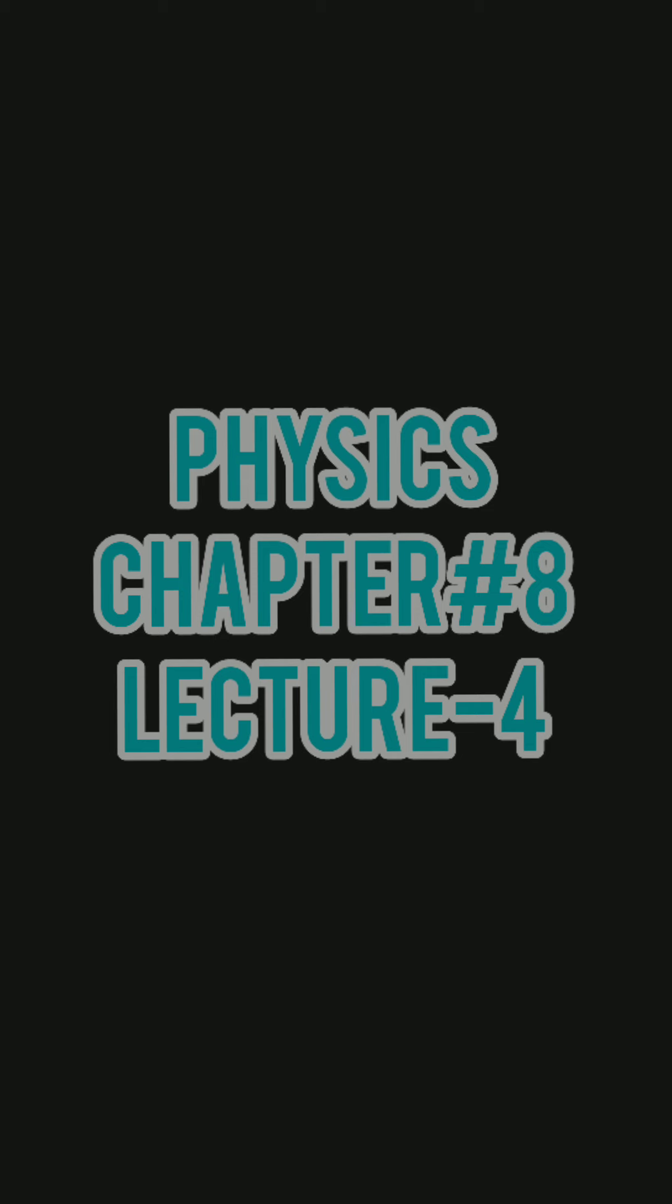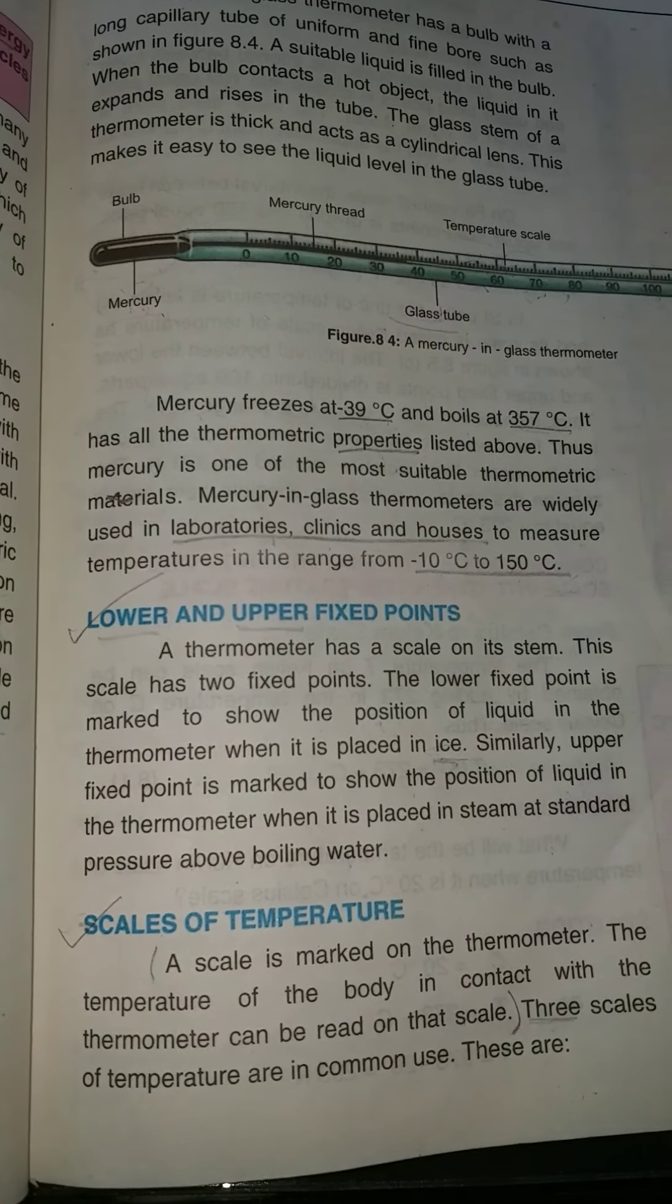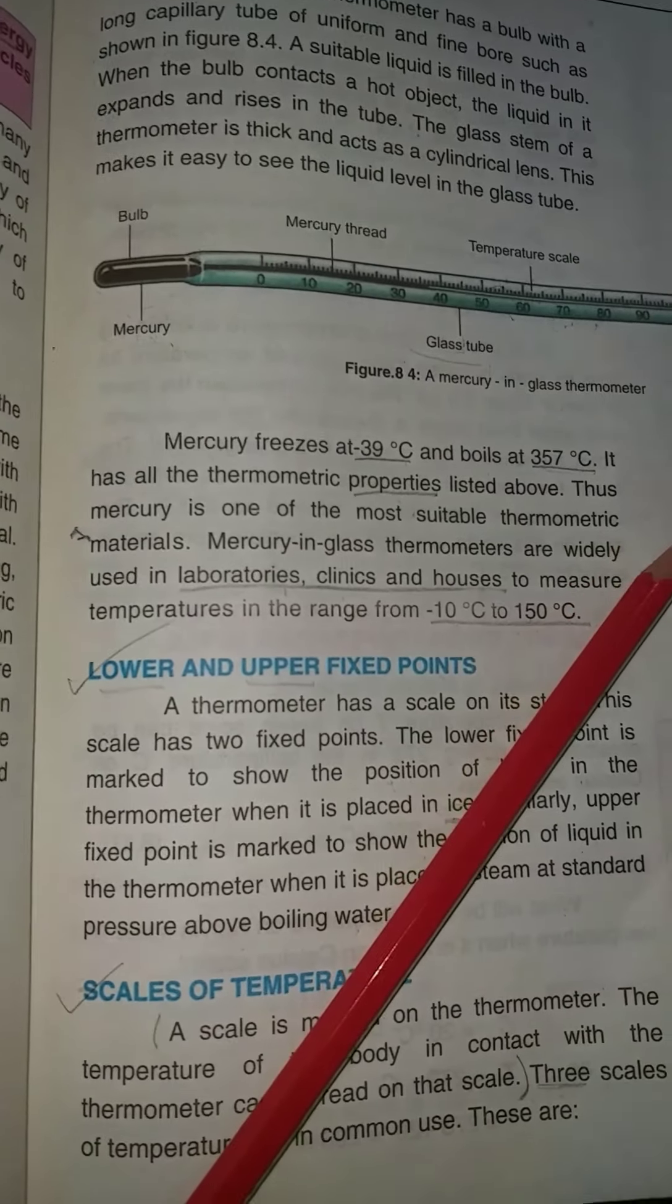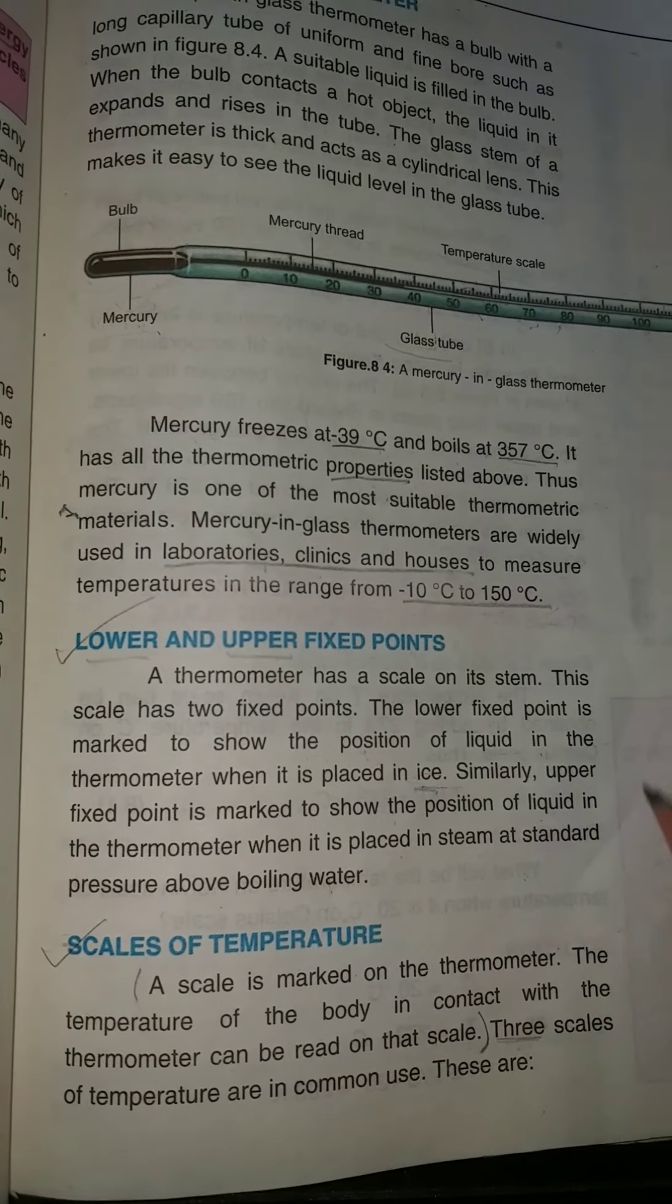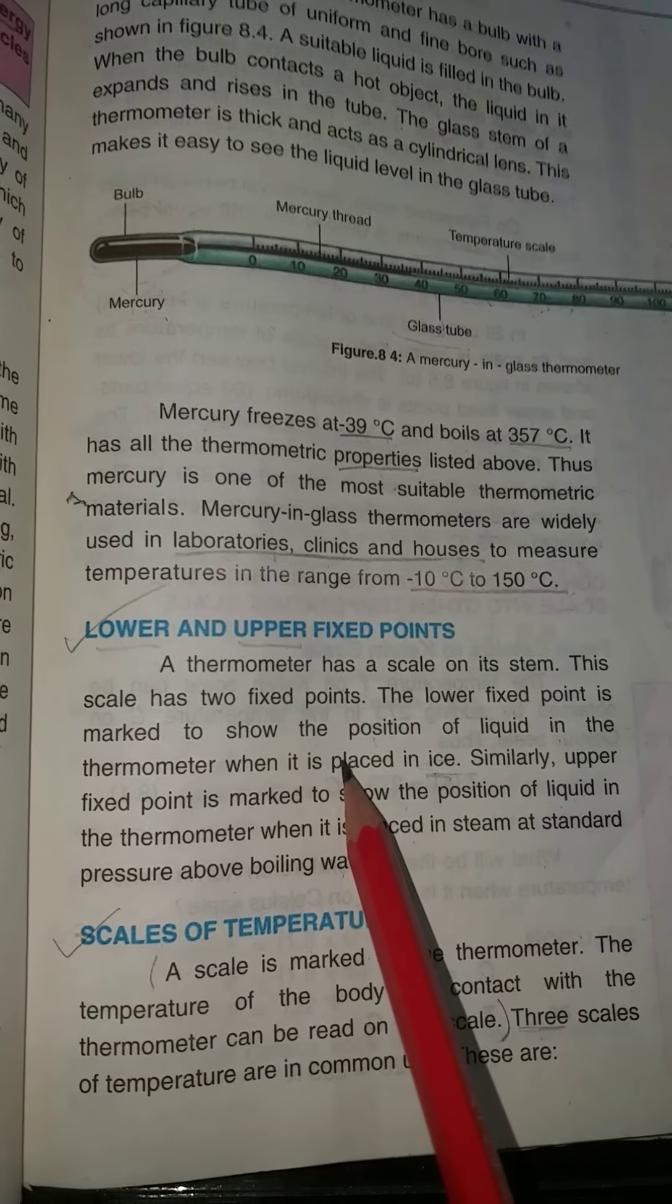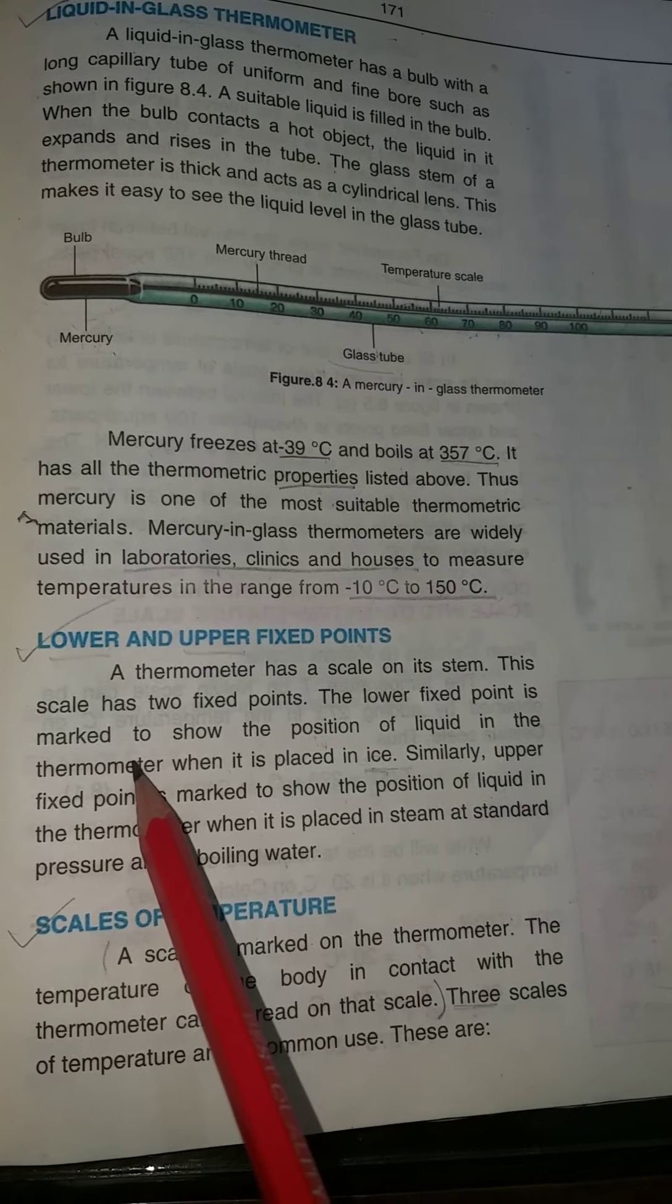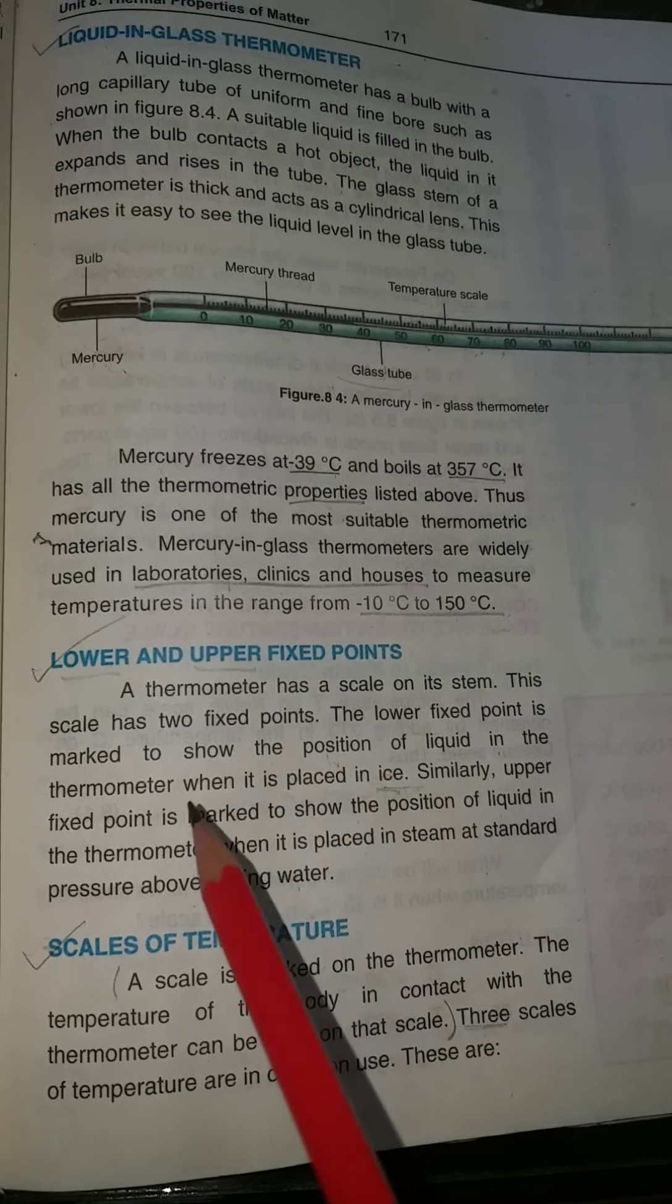Next we look at lower and upper fixed points. There are two fixed points on a thermometer - one lower fixed point and one upper fixed point. When it moves to the lower position, the temperature is falling or low.